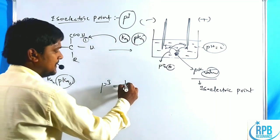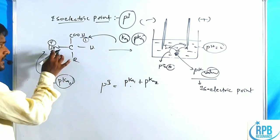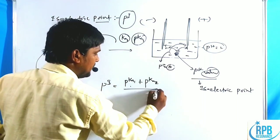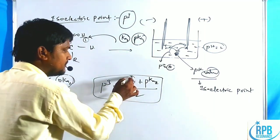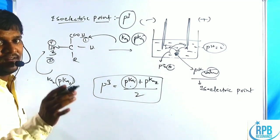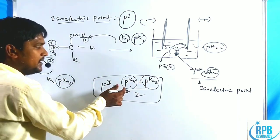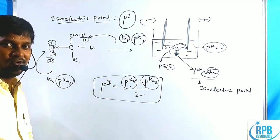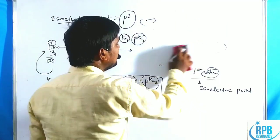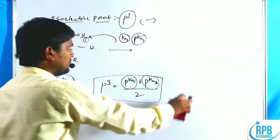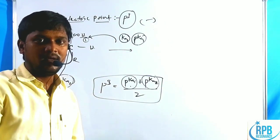The isoelectric point pI is calculated as the average of the two pKa values: pI = (pKa1 + pKa2) / 2, where pKa1 is for the carboxylic acid proton and pKa2 is for the ammonium proton. This formula applies only when there is one amine functionality and one carboxylic acid functionality — i.e., when there are no ionizable side chains with extra amine or carboxylic acid groups.